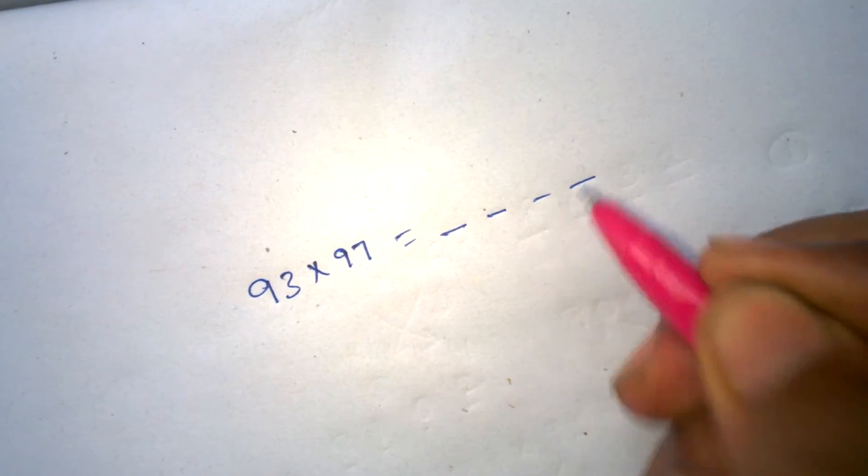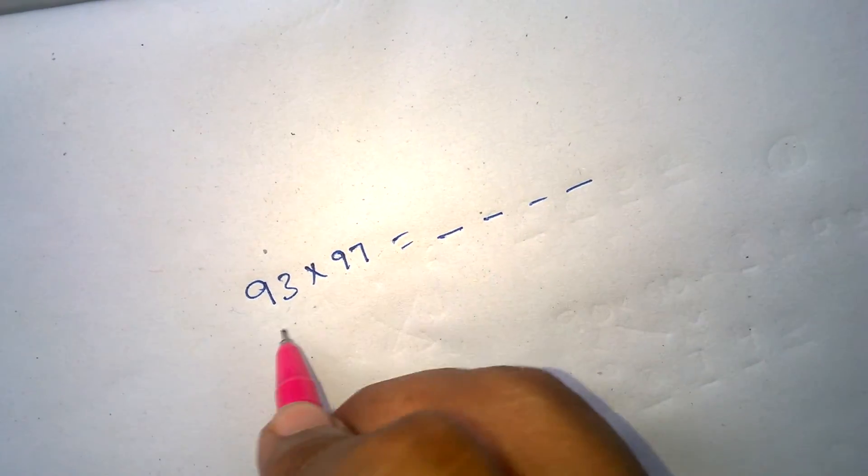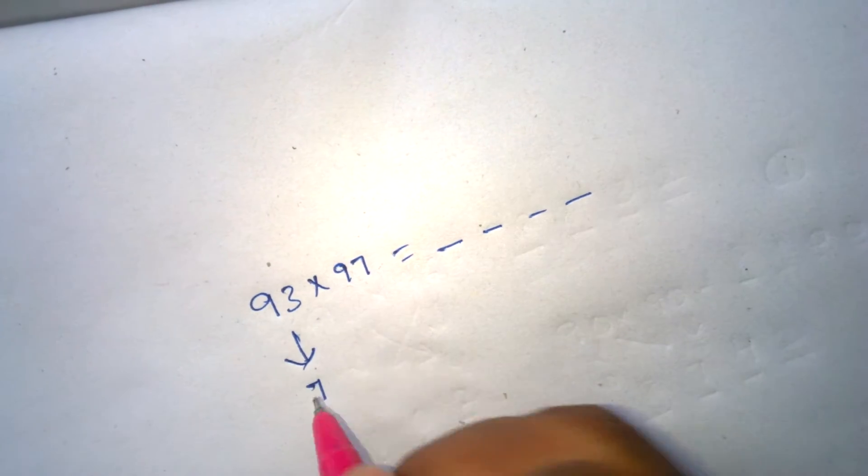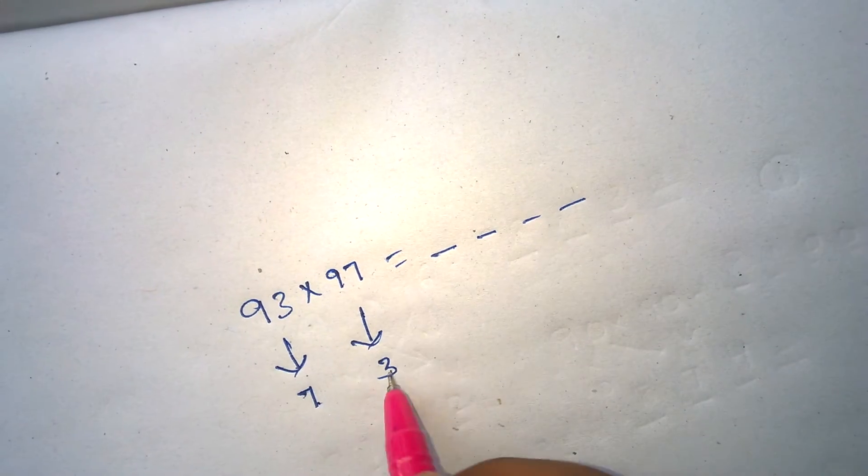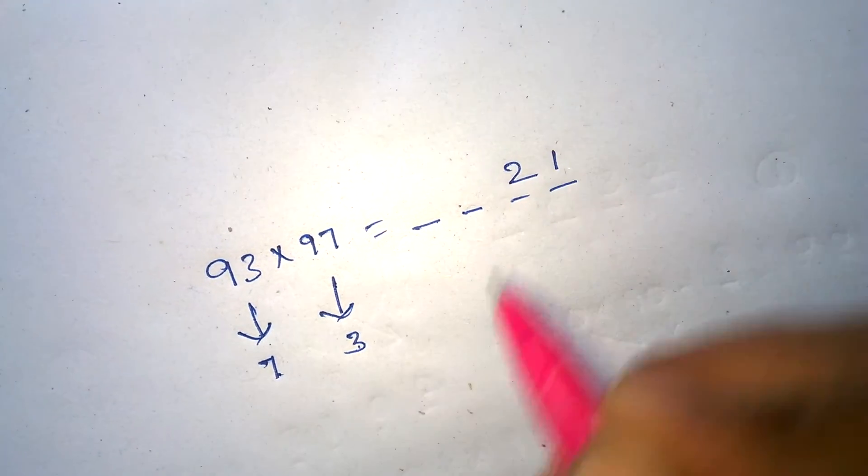The answer has four digits. 100 minus 93 is 7. 100 minus 97 is 3. 7 times 3 is 21. Now the last digits are there.